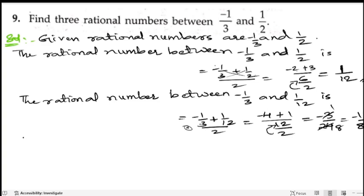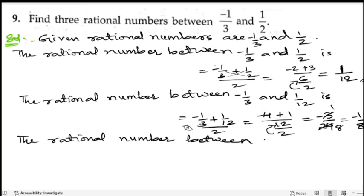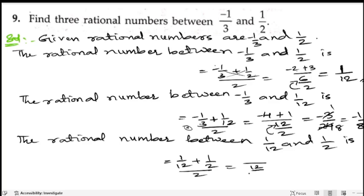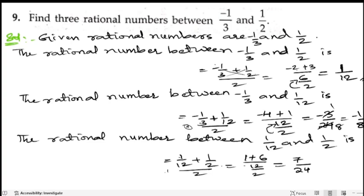Now let us find out the third rational number between 1 by 12 and 1 by 2. So we calculate 1 by 12 plus 1 by 2, divided by 2. The LCM is 12. So we get 1 plus 6 by 12, divided by 2, which gives 7 by 24. So this is the third required rational number.